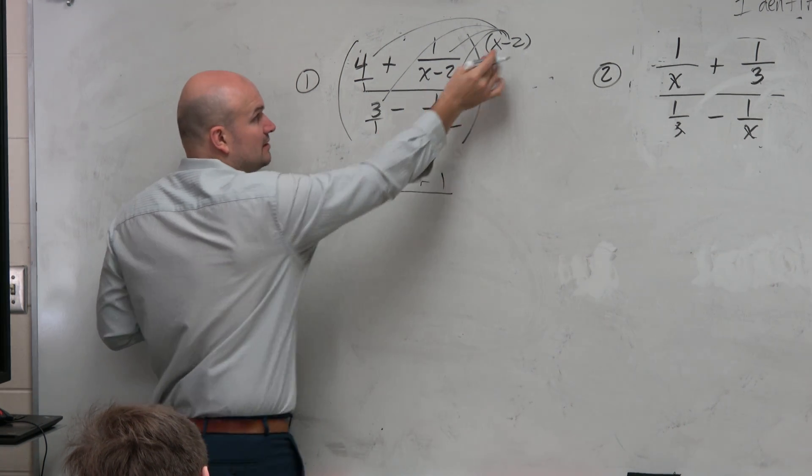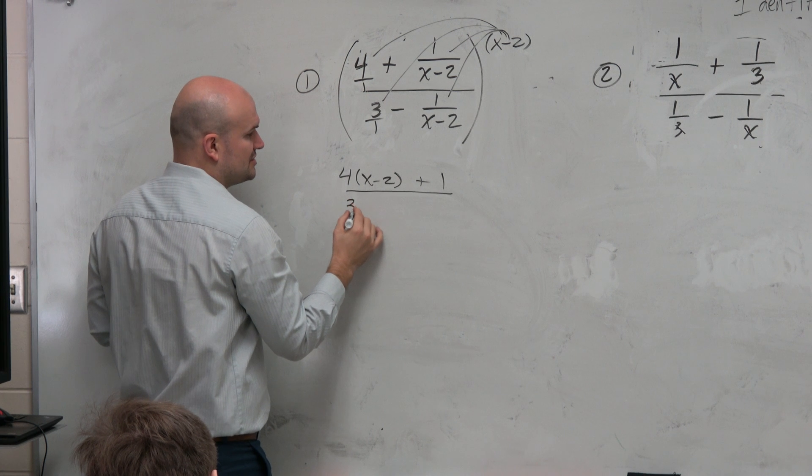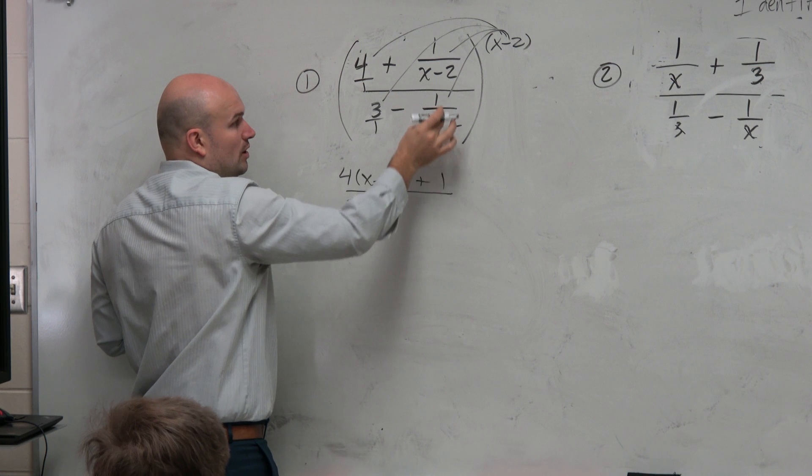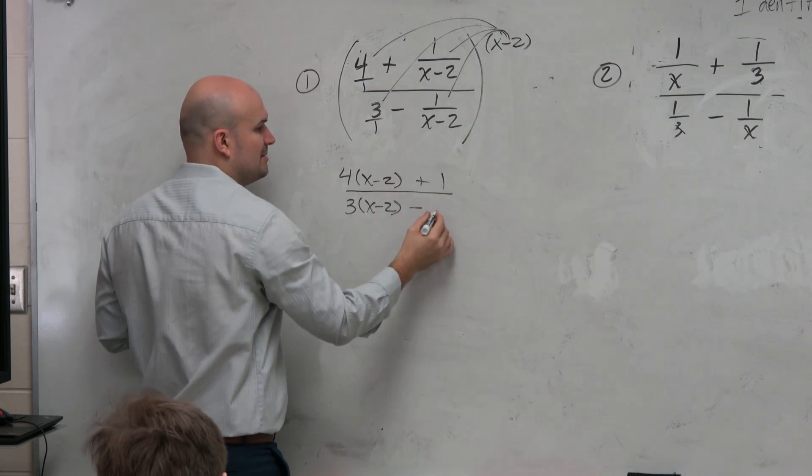Then in the denominator, x minus 2 times 3 is just 3 times x minus 2. And x minus 2 times a negative 1 over x minus 2 is just going to be a minus 1.